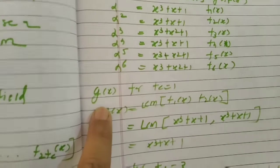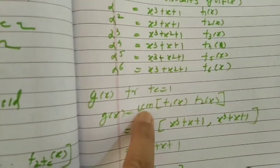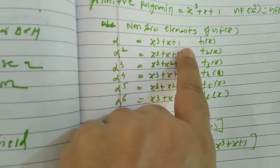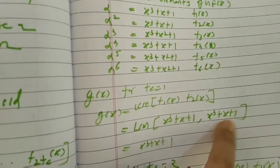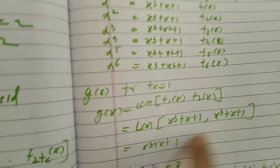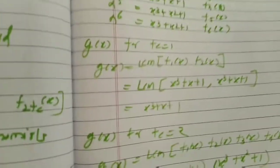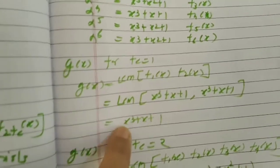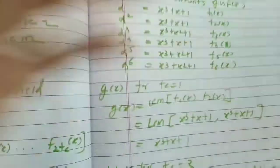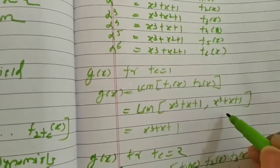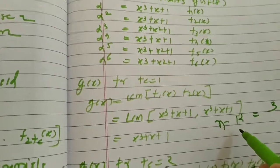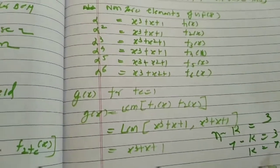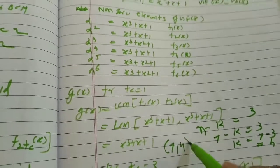Let us find g(x) for TC = 1. g(x) is the LCM of f1(x) to f_{2·TC}. TC = 1 means 2·TC = 2, so we take f1(x) and f2(x). f1(x) = x³ + x + 1 and f2(x) = x³ + x + 1, so the LCM is just x³ + x + 1. The degree of the generator polynomial is n - k = 3, so k = 7 - 3 = 4. This is the (7, 4) BCH code.